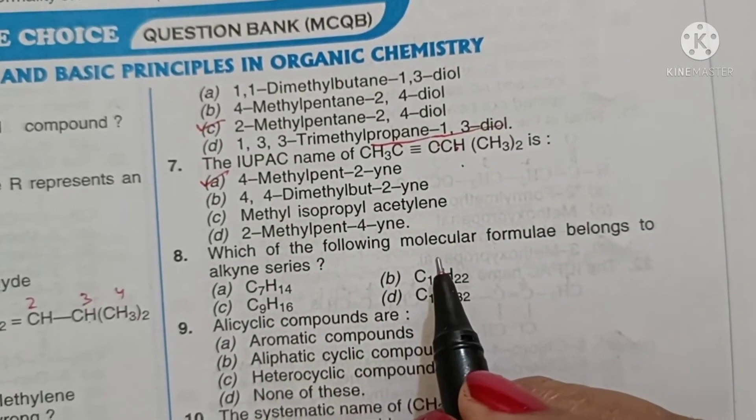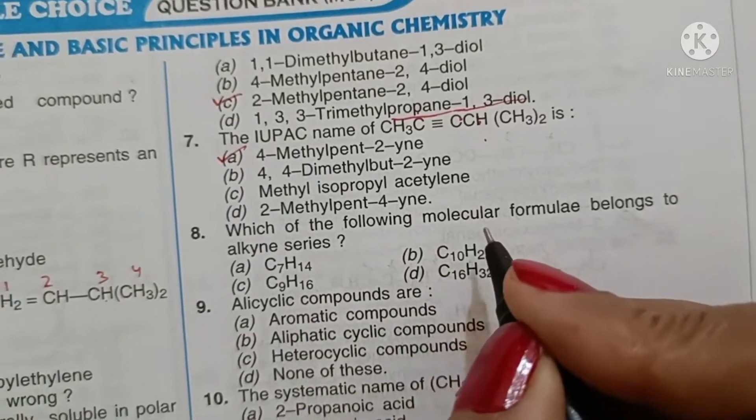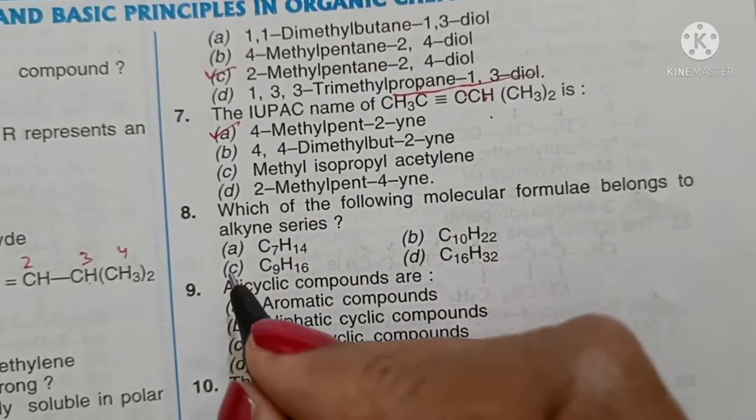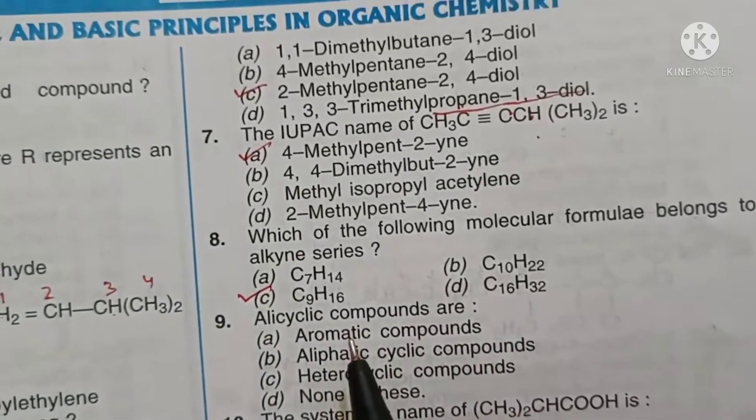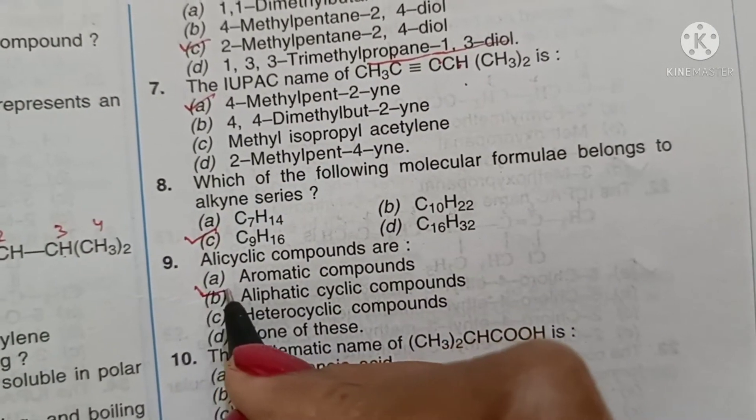Which of the following molecular formulae belong to alkyne? The formula should be CnH2n minus 2, so option C. Alicyclic compounds are aliphatic cyclic compounds, option B.